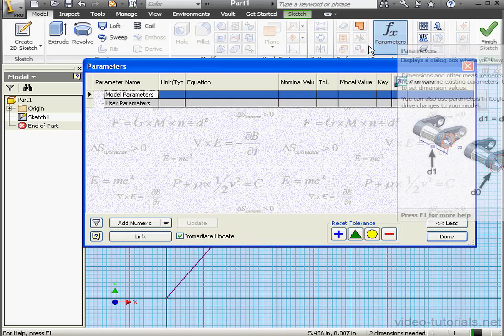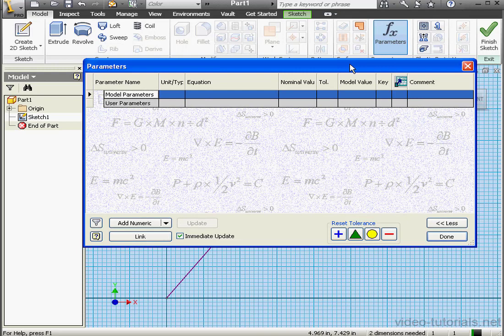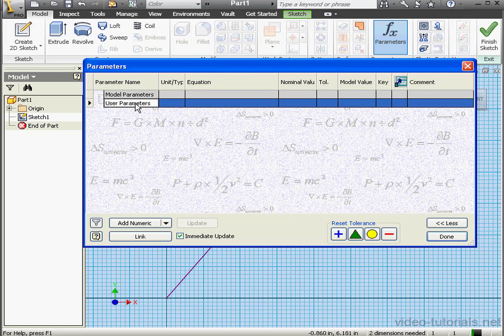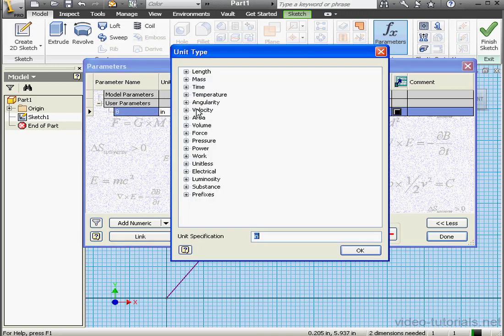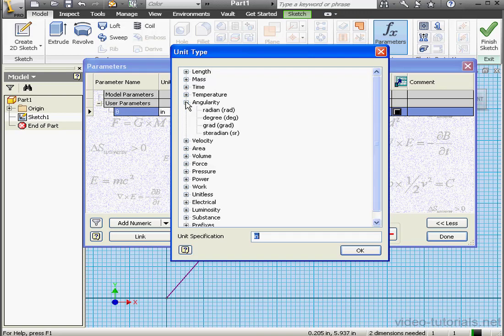We're going to discuss the Parameters window in more detail in a later lesson. For now, let's select a user parameter and select Add Numeric. Then we'll enter the parameter name, theta. Now let's select a unit. We'll double-click in the cell, expand the Angularity branch, and select Degrees. Then click OK.